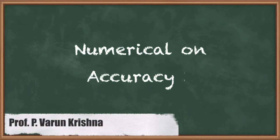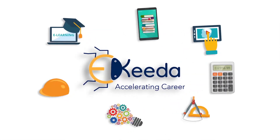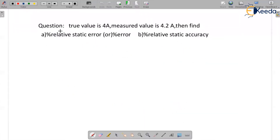Hi students, I am going to teach a numerical on accuracy. The question is: true value is 4 amperes, measured value is 4.2 amperes. Find (a) percentage relative static error, or percentage error, and (b) percentage relative static accuracy.